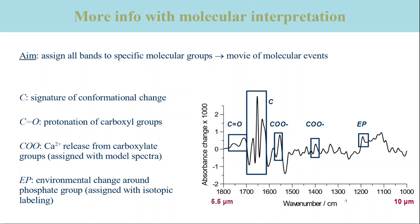I will illustrate the strategies for a molecular interpretation mainly by examples from our own research. The spectrum on this slide shows the difference spectrum between two calcium ATPase states, calcium E1 and E2P. Several regions are marked in this spectrum because they give information on different functional groups. The largest bands are observed in the amide-1 region and they reveal the conformational changes of the protein.